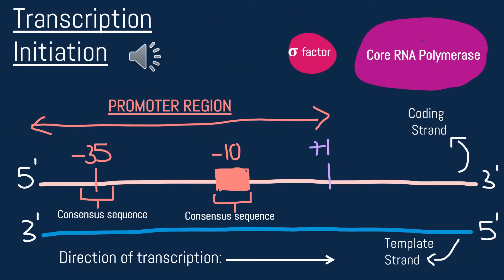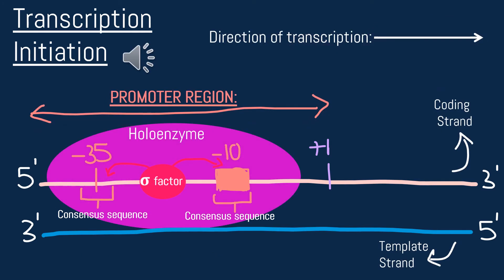Now let's look at transcription initiation based on what we just learned and add in our workers: the core RNA polymerase and sigma factor. Initiation begins when the core RNA polymerase and sigma factor bind together in the promoter region at the negative 35 and negative 10 consensus sites to create one unit, the holoenzyme. This holoenzyme goes on to separate the DNA strands and form a transcription bubble.